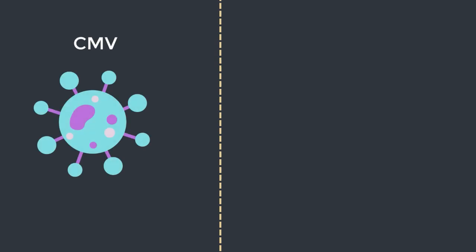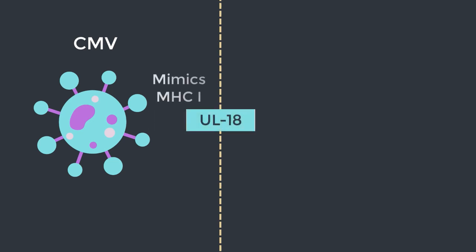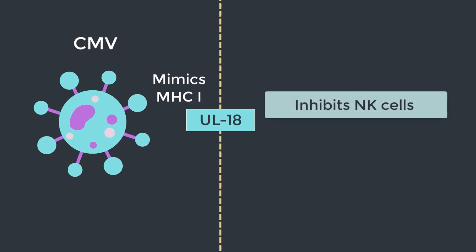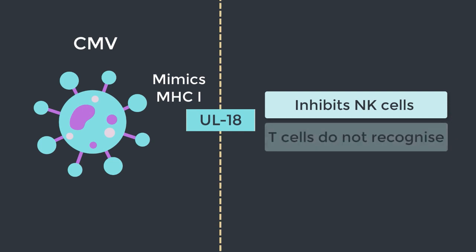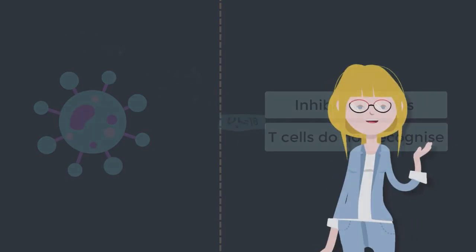Another cheeky little virus is CMV — cytomegalovirus. CMV generates a molecule known as UL18, which mimics MHC1. So it looks a lot like MHC1 and has the ability to inhibit natural killer cells, but T cells don't recognise it. Well played, CMV. Well played.